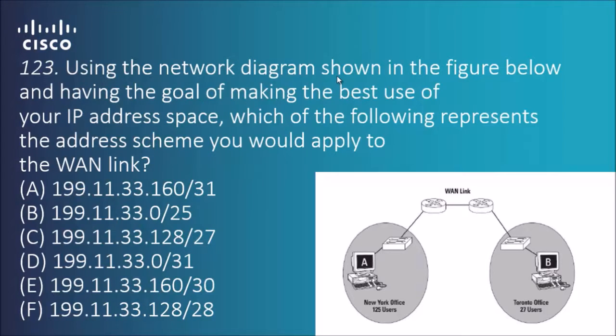And the final question for today, Question 123: Using the network diagram shown in the figure below and having the goal of making the best use of the IP address space, which of the following represents the address scheme you would apply to the WAN link? Again, best use is the key term and it's very similar to the question before.